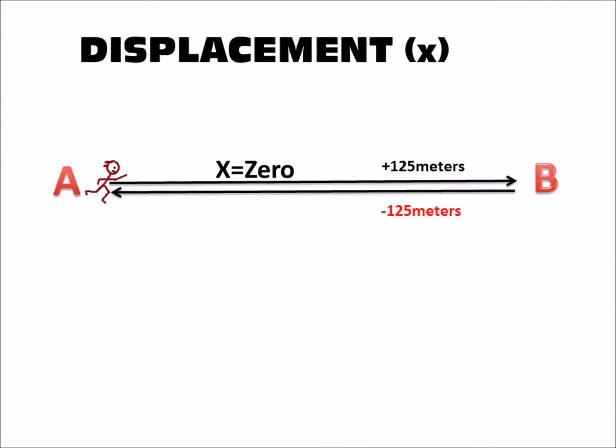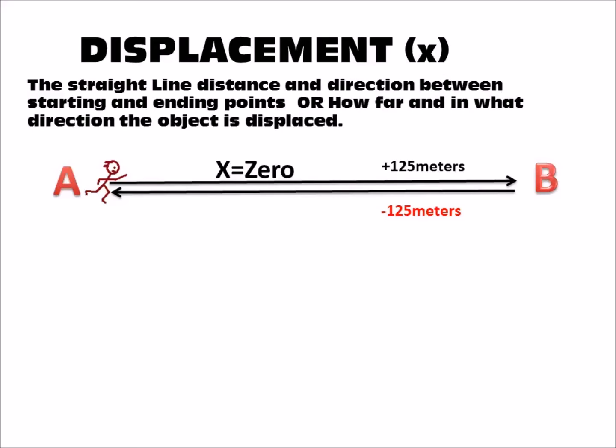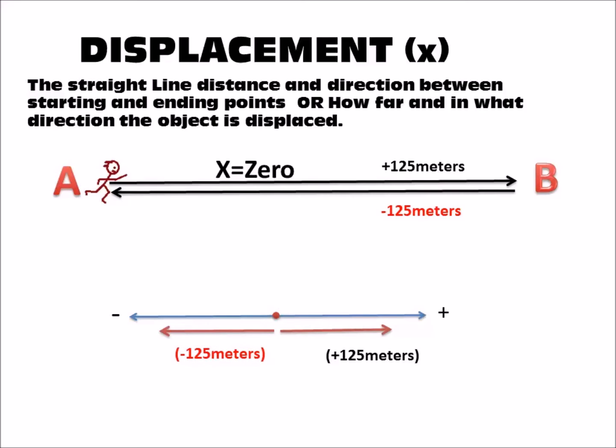The runner goes from A to B — positive 125 meters — then turns around and runs negative 125 meters. The sign of the number tells you the direction. If we look at this on a number line, positive 125 meters plus negative 125 meters gives us a displacement of zero. That sign is important. You can use east or west, up or down, left or right, or you can use a positive or negative sign on the number to indicate direction.